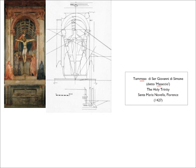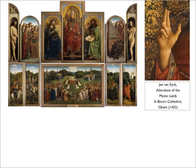Masaccio's Trinity includes a memento mori, or reminder of death, as a contrast with the eternal life of salvation. The tomb at the base of the work has an inscription which reads: 'That which you are now, I once was. That which I am now, you will become.'